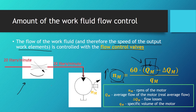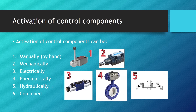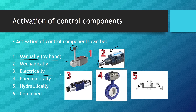In terms of how control components can be controlled or operated, we can divide them into groups. First, they can be activated manually by hand — the simplest form, as seen with a directional control valve with a lever. Second, they can be activated mechanically, using rollers and springs. Third, we can activate them electrically by using solenoids, which are used a lot in hydraulics. Fourth, pneumatically — more common in pneumatic systems. Fifth, hydraulically, when we use fluid to activate the valves.